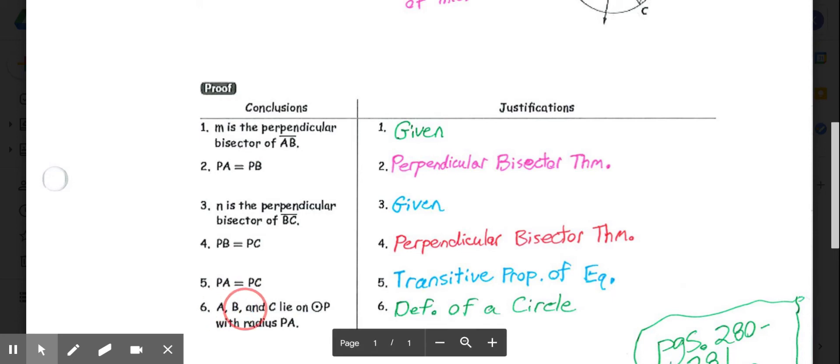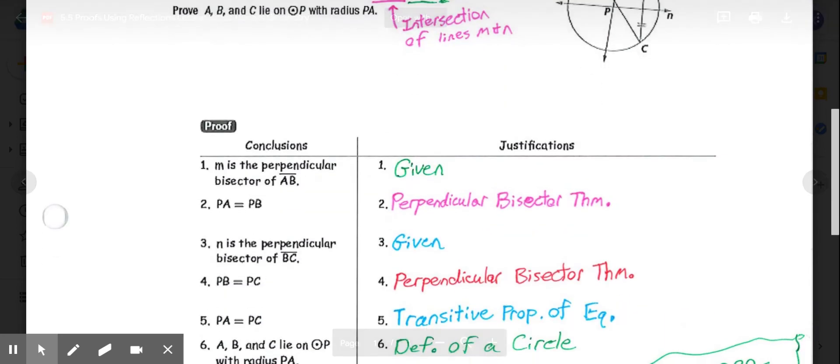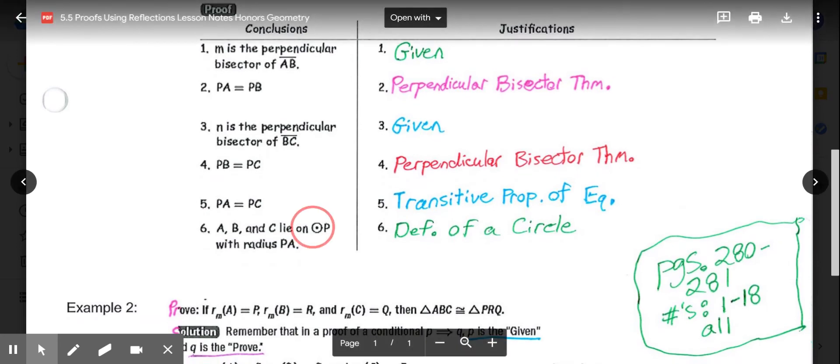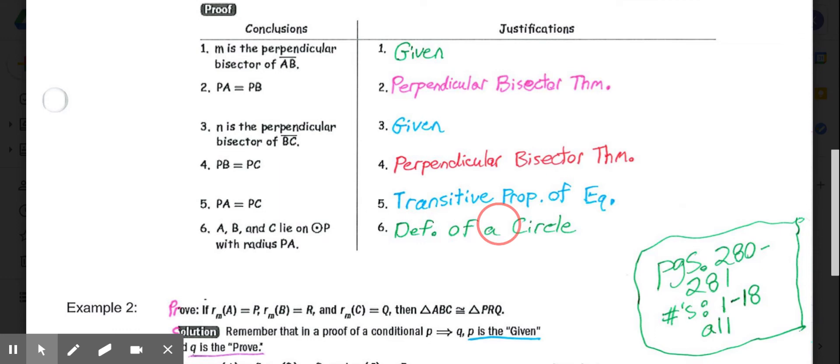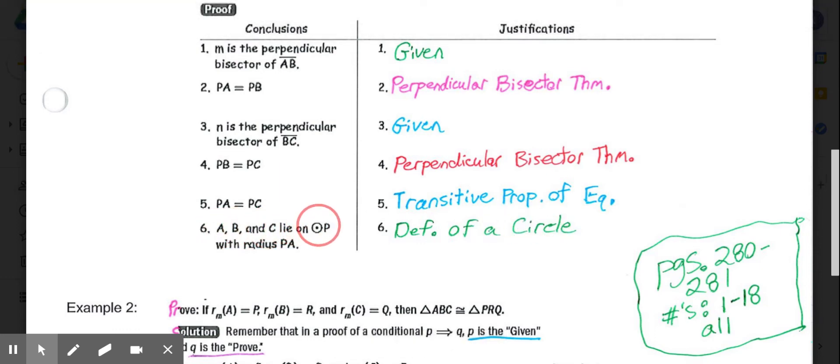So what that tells me is PA equals PB, which equals PC, meaning A, B, and C are all the same distance from point P. Anything that's equidistant from a center point would be the definition of a circle, saying A, B, and C lie on circle with a center P, and the radius would be the distance of P to A. That's all true because we know those three points are the same distance from our center, so definition of a circle.